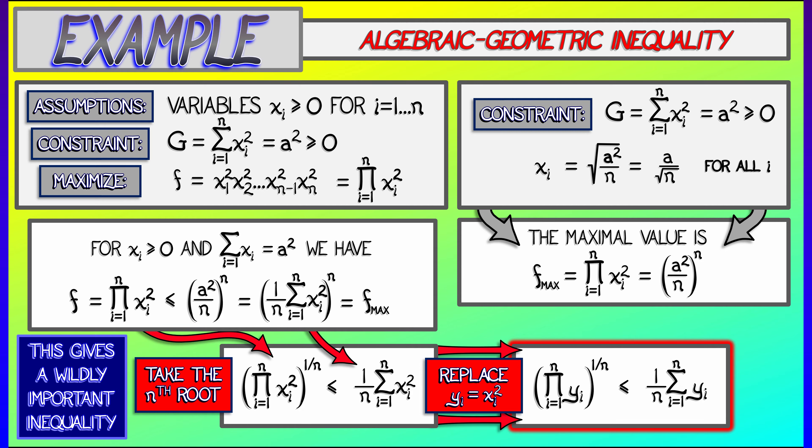That term on the right-hand side is just the average, or the algebraic mean. On the left-hand side, we have the geometric mean of these y variables. And this is a phenomenally important inequality in mathematics called the algebraic geometric inequality, or AMGM sometimes. That means that the geometric mean is always less than or equal to the algebraic mean.